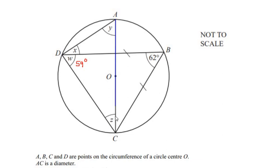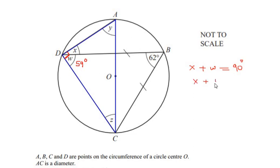Since AC is the diameter, the angle at D in the semicircle is 90 degrees. The full angle at D is made up of X and W, so X + W = 90 degrees. Substituting W = 59 degrees, we get X = 90 − 59 = 31 degrees.